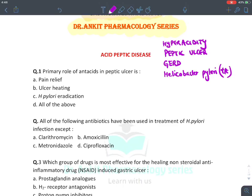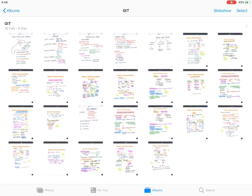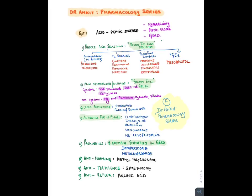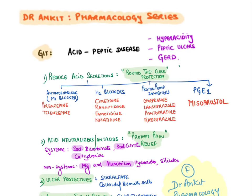Let's see the drugs we have for acid peptic disease. The first class reduces acid secretion from the parietal cells of the stomach, providing round-the-clock protection by continuously suppressing acid production. The first drug is anti-muscarinic agents, which block M1 receptors on parietal cells. The drugs are pirenzapine and telenzapine. Then we have H2 blockers, which block histamine-2 receptors on the stomach. These are cimetidine, ranitidine, famotidine, nizatidine, and many others.